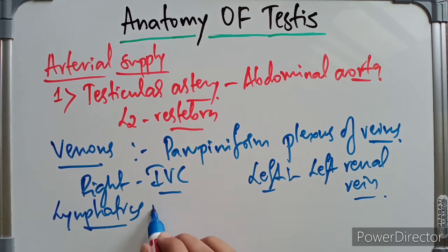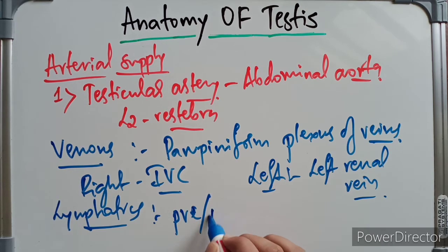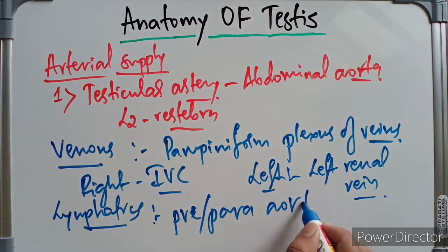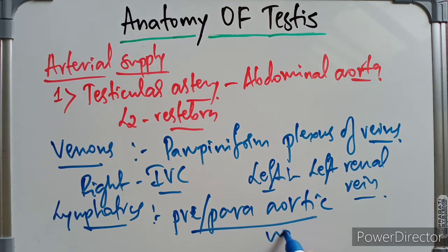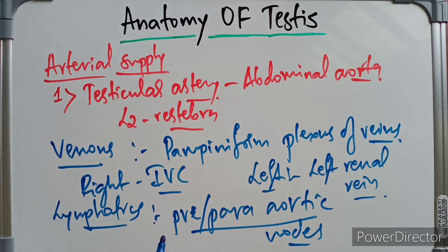The lymphatics from the testis drain into the pre-aortic and para-aortic nodes. This covers the arterial supply, venous drainage, and lymphatics of the testis.